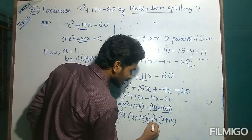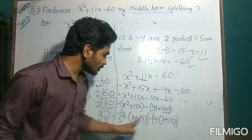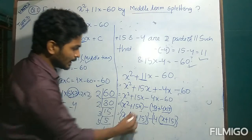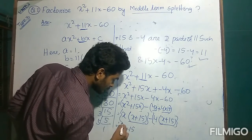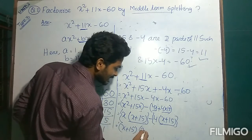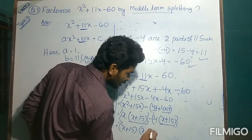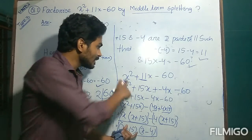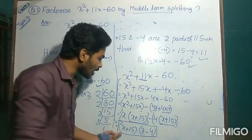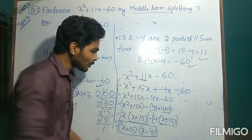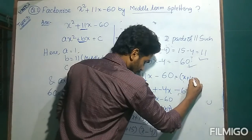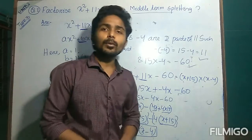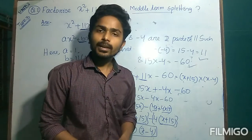You can see x plus 15 is present in the first term and x plus 15 is also present in the second term. So take x plus 15 as common. The remaining factors give x minus 4. Hence this quadratic polynomial is converted into the product of two linear polynomials: x plus 15 into x minus 4. The quadratic polynomial is now factorized into two linear polynomials.